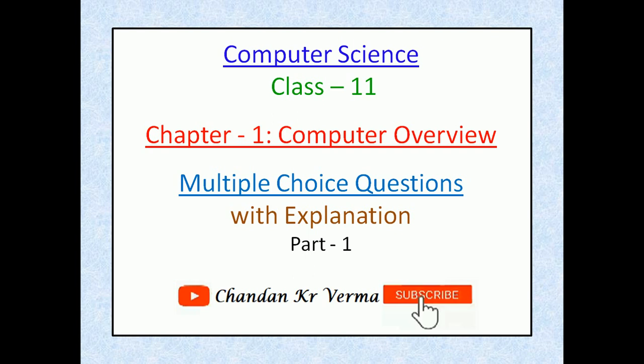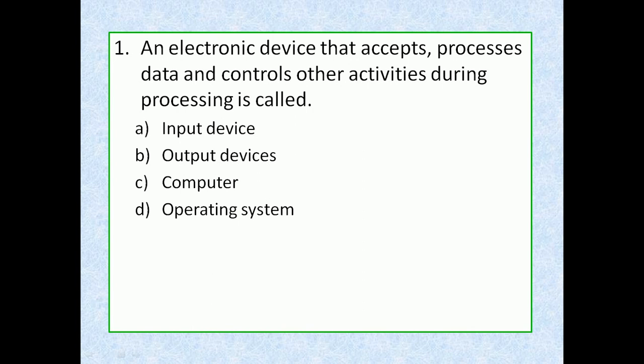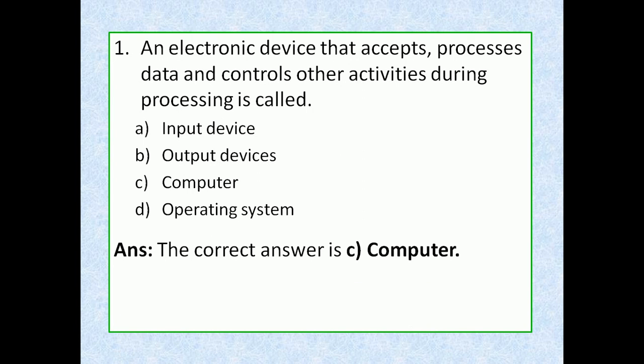Question 1: An electronic device that accepts, processes data and controls other activities during processing is called — option A: input device, option B: output device, option C: computer, option D: operating system. The correct answer is option C, computer.